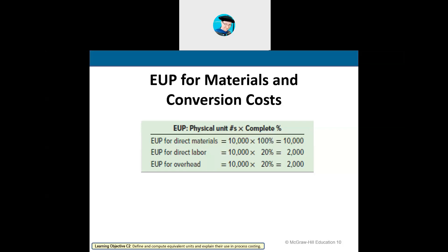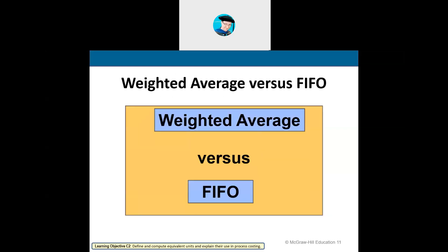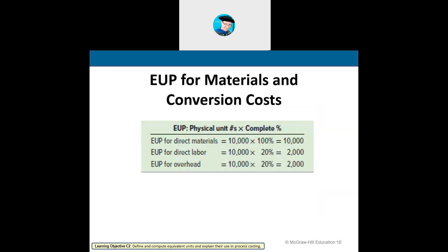For direct labor, each unit being produced utilizes 20% labor. So 10,000 units times 20% gives me 2,000 equivalent units. For factory overhead, my overhead rate is also 20%, so 10,000 units times 20% gives me 2,000 for overhead. In order to make 10,000 units, my total cost will be $14,000. The good news is a lot of the data will be given to you in the homework or quiz — the percentages will be there.